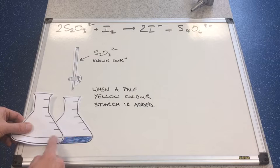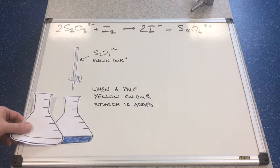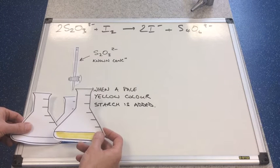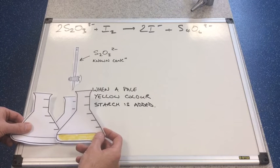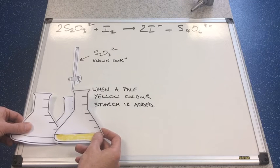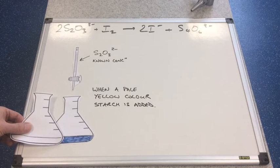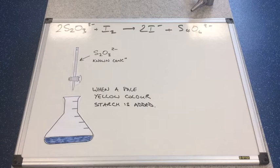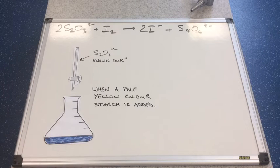It's a lot easier to spot than the palest of yellow — I'm sure you can appreciate what I'm saying — it's much more difficult to see that colour change than the blue-black to colourless change. So just before all of the iodine's gone, you've got this pale yellow colour, you add some starch, it goes very dark blue, and then you can see the end point much more clearly.